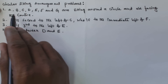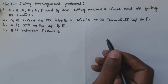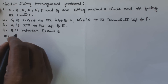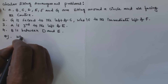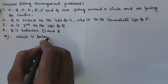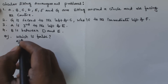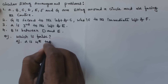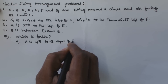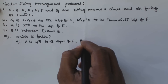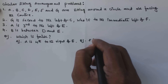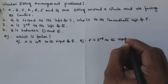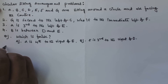Based on the sitting positions we have to solve the following questions. Question one: which of the following is false? Option A is 'A is fourth to the right of E,' and option B is 'F is third to the right of D.'